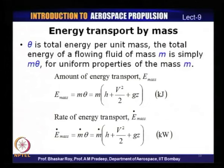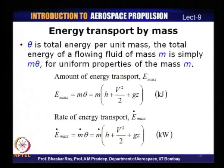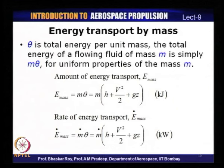The amount of energy transport E_mass equals mass times theta, where theta equals H plus V²/2 plus gZ. In rate form, the rate of energy transport E_dot_mass equals M_dot times theta, where M_dot is the mass flow rate. The amount of energy transport is in kilojoules, and the rate of energy transport is in kilowatts — mass flow rate times the total energy gives kilojoules per second, equal to kilowatts.